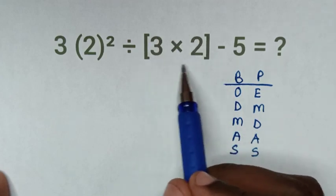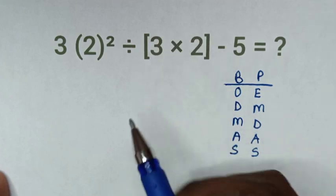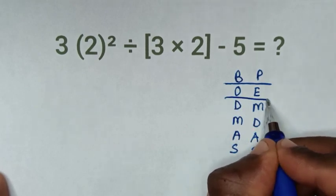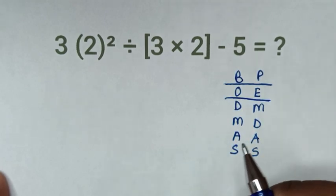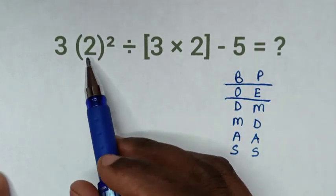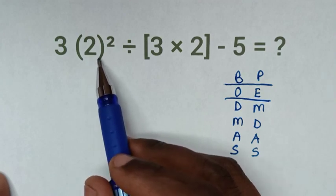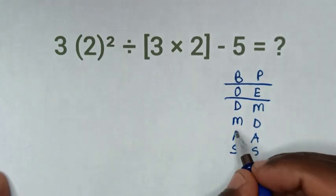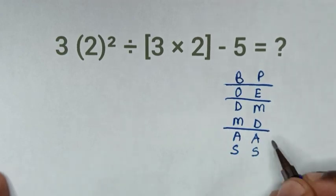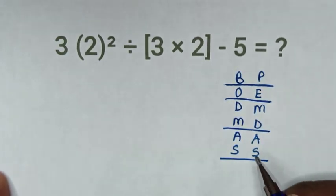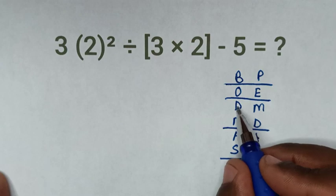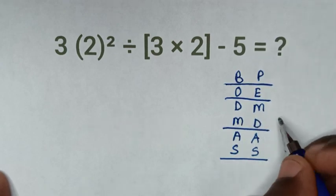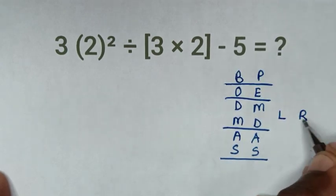So we'll start to deal with this squared bracket. Then in the next step, we'll deal with this order or exponent — specifically this 2 bracket squared. And then we'll deal with multiplication and division from left to right.